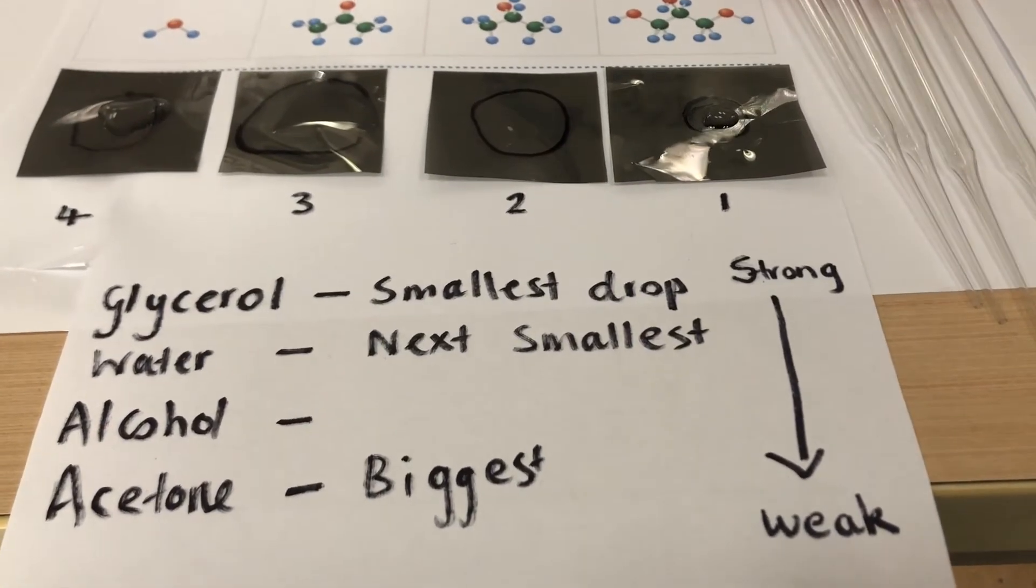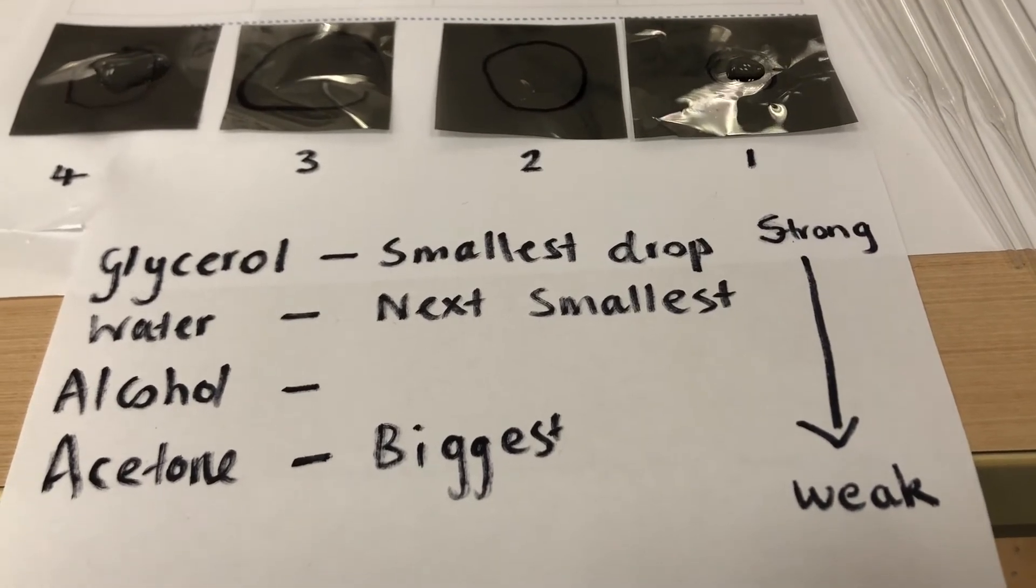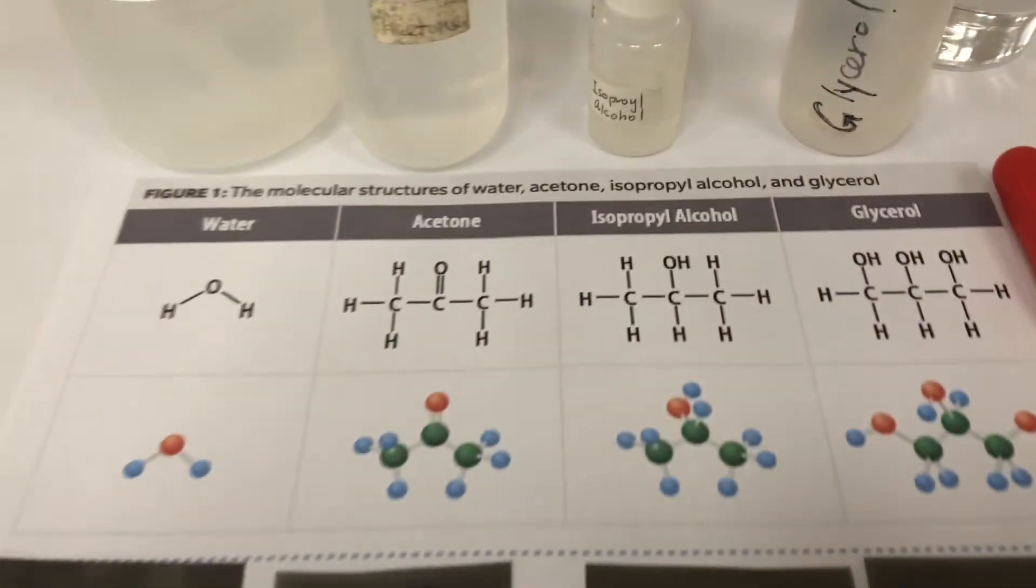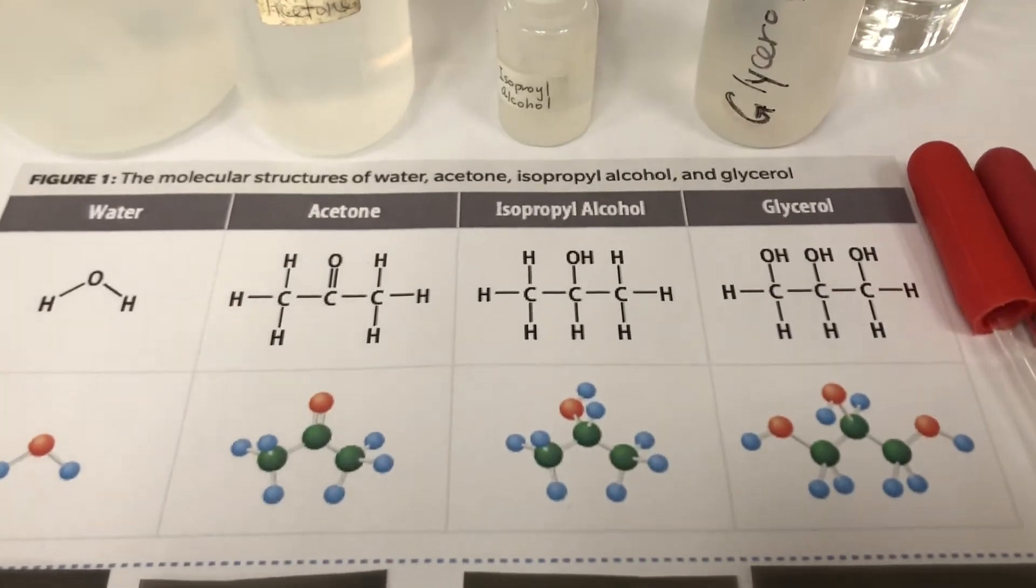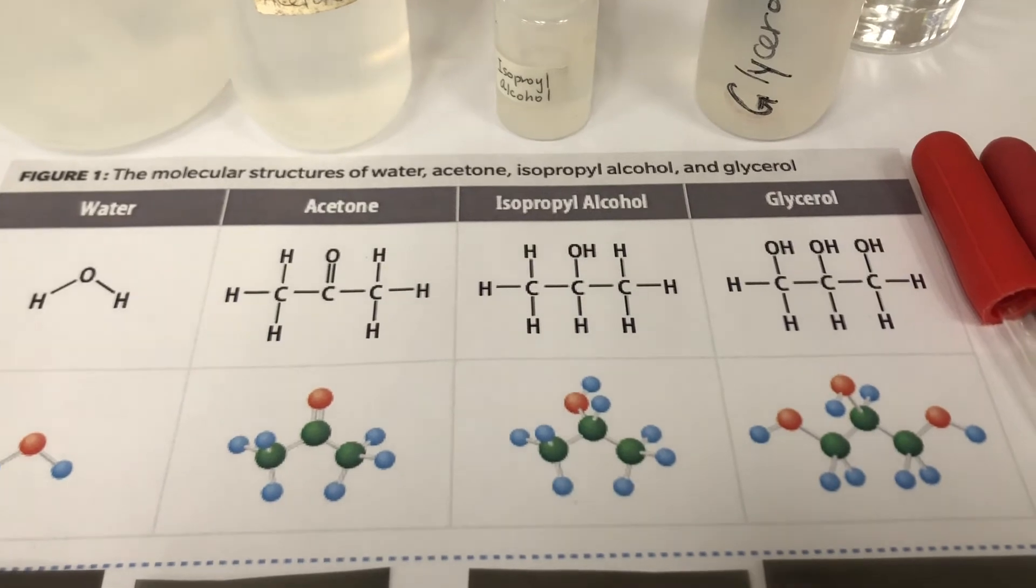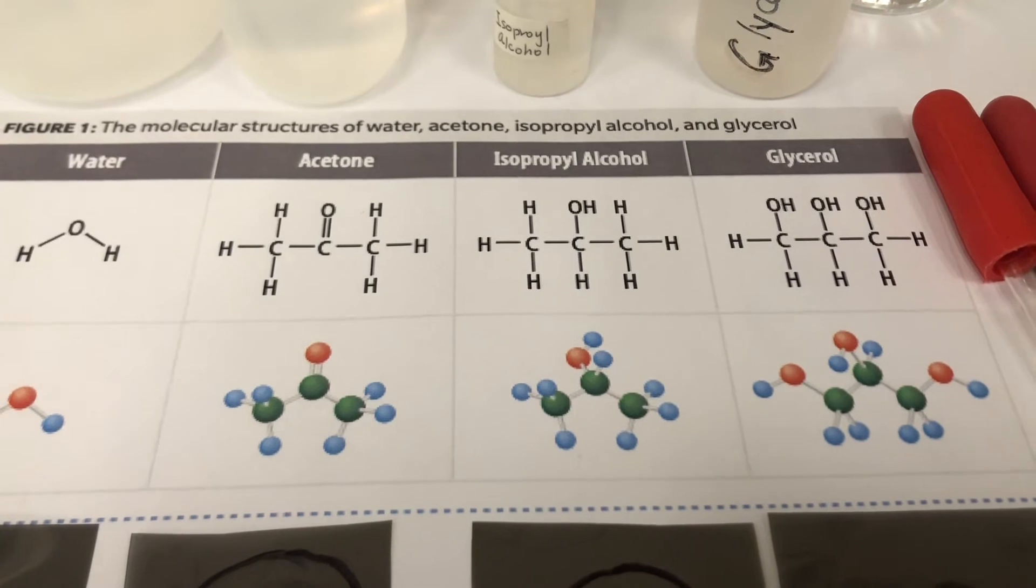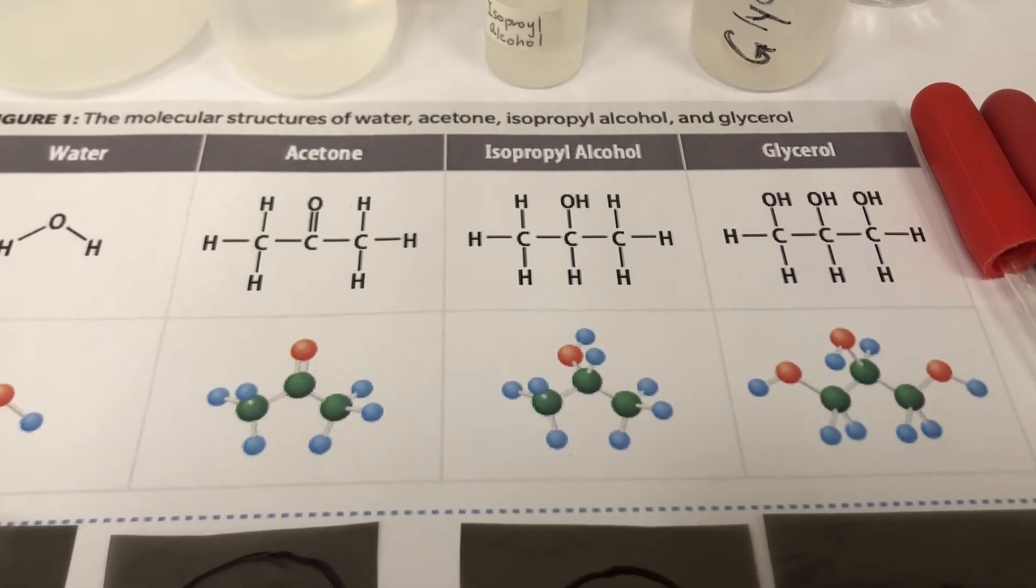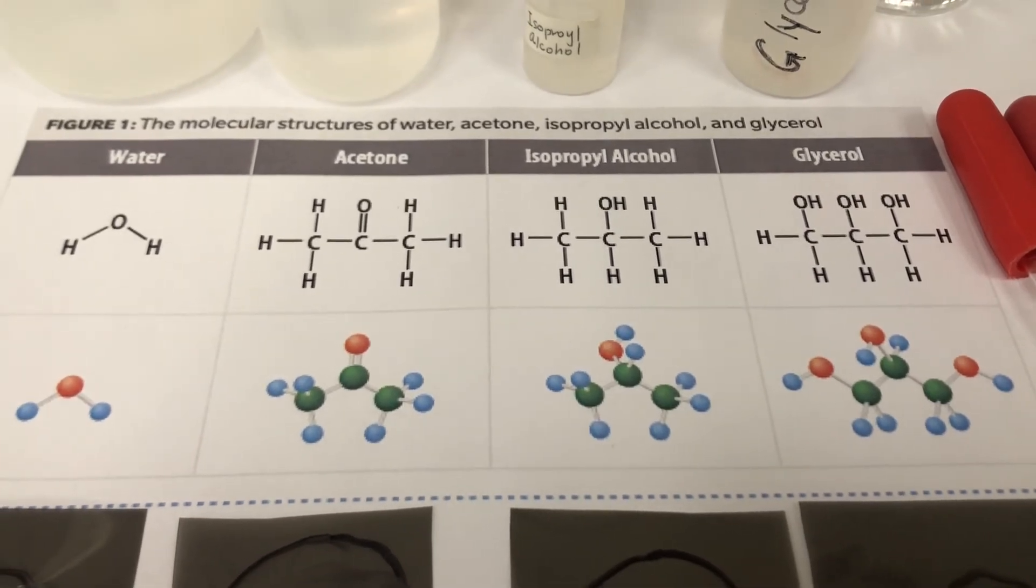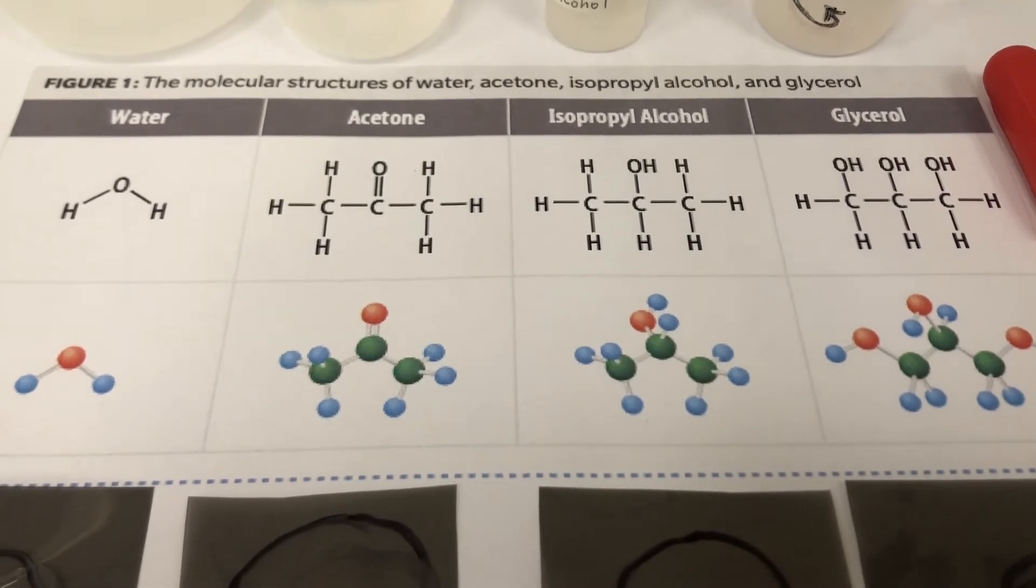So we did the experiment and you can see that glycerol had the smallest drop followed by water, then alcohol and acetone. To be able to understand why we had those results, we really need to look at the structure of the different solutions that we had here. You can see there's lots of cross-cutting concepts, patterns that we can observe of these molecules. The question is, why is glycerol, why does it form a smaller drop than water? Why are its molecules more attracted to each other?